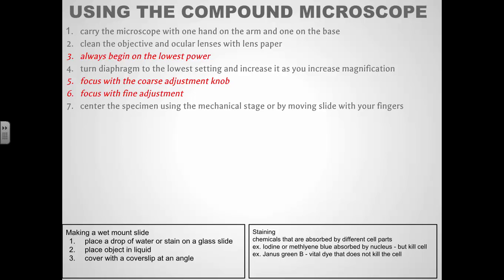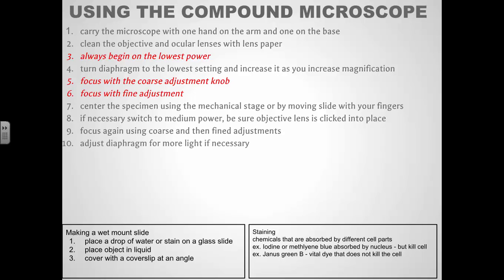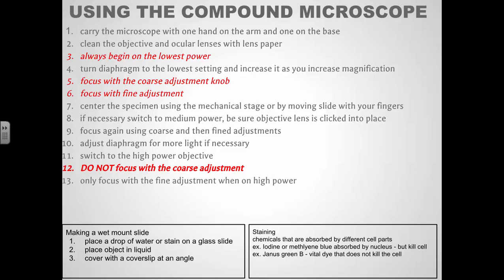You always want to make sure the object is centered before you change your power. When you switch to medium power, you have to make sure the objective is actually clipped into place. If you're halfway between two objective lenses, you're not going to see anything. So you've got to make sure it's clipped into place. And then again, you focus using the coarse adjustment, the fine adjustment. Center your specimen, adjust the diaphragm if you need to, and then you can switch to high power. When you do that, you only focus using the fine adjustment. Never use the coarse adjustment when you're on high power. It can lead to the objective lens crushing the slide. Sometimes you might not see the specimen. You might lose it. If that's the case, you just go back to medium power, find it, focus, and then go back to high power.